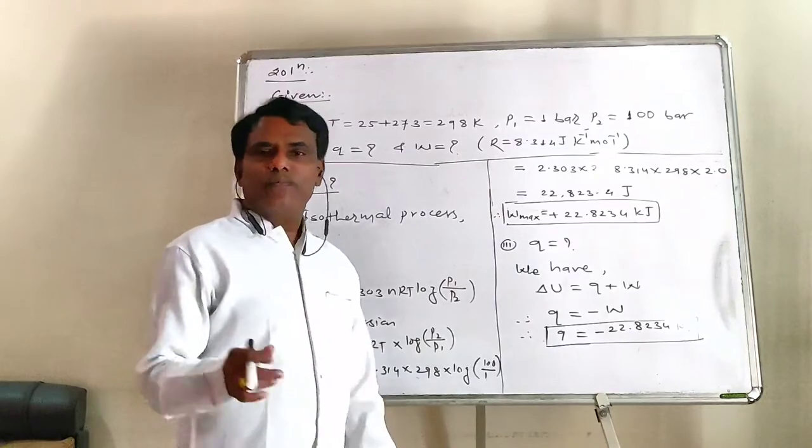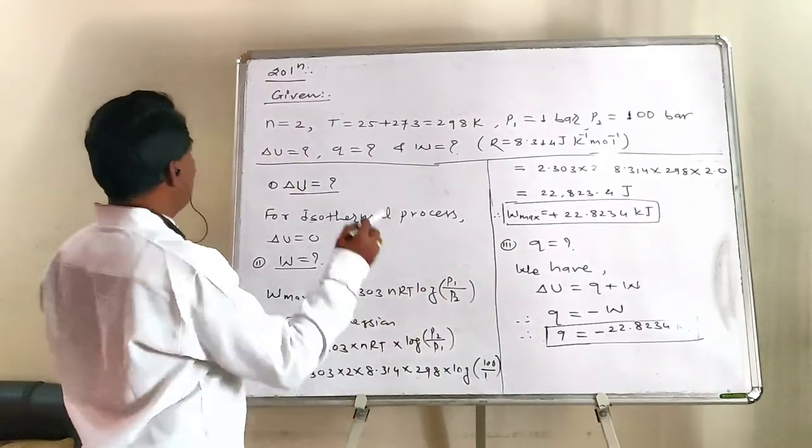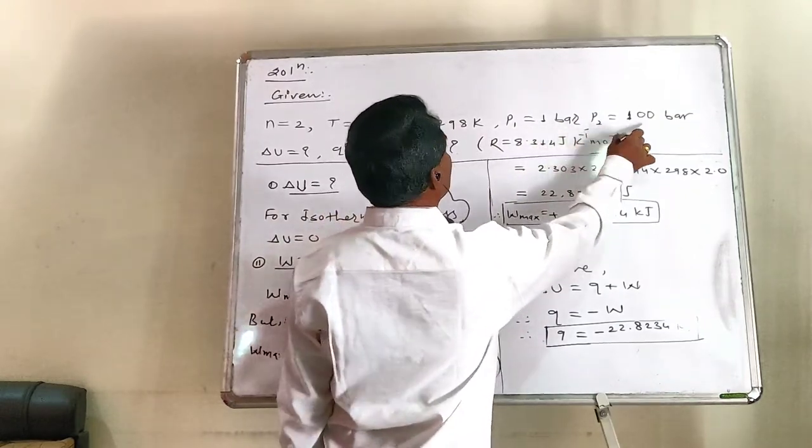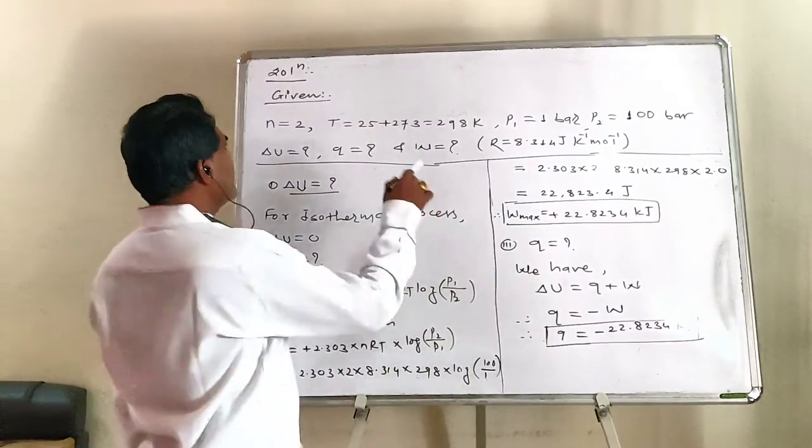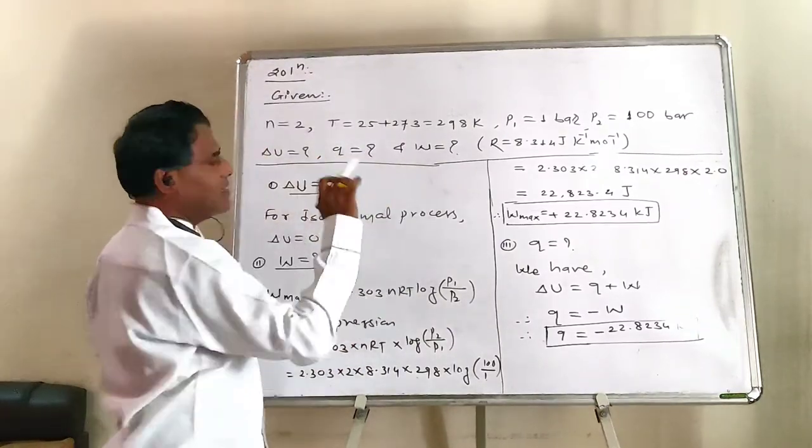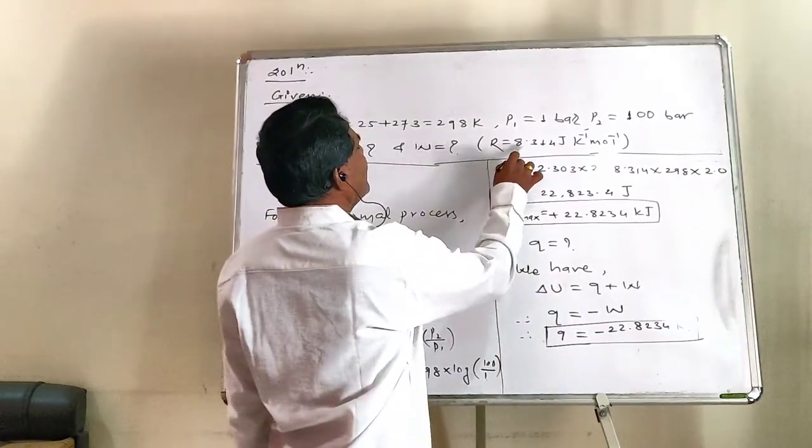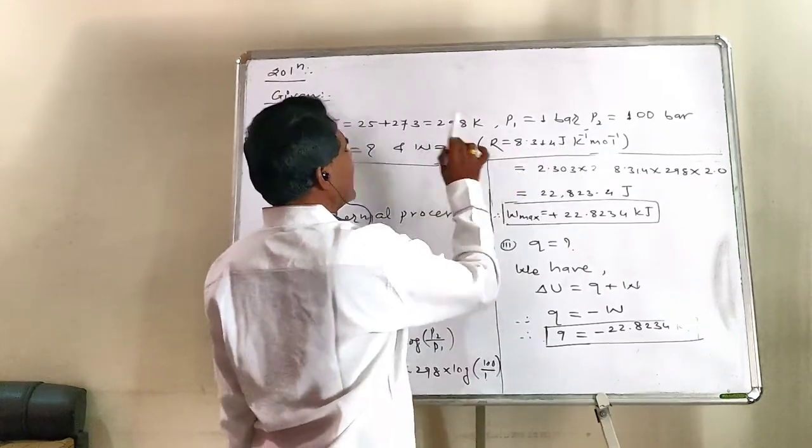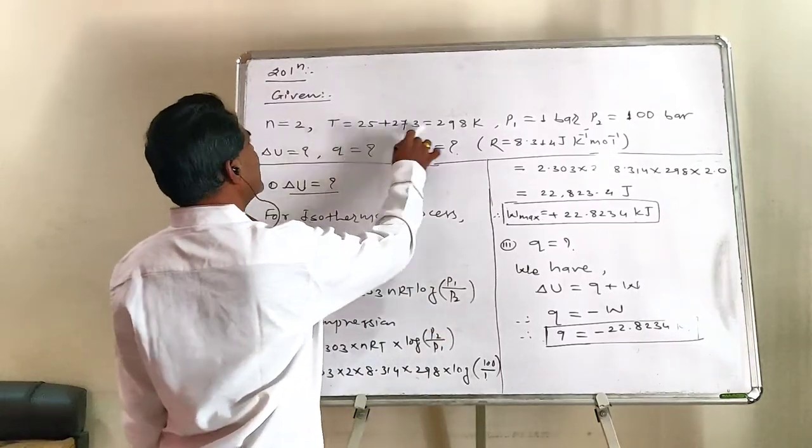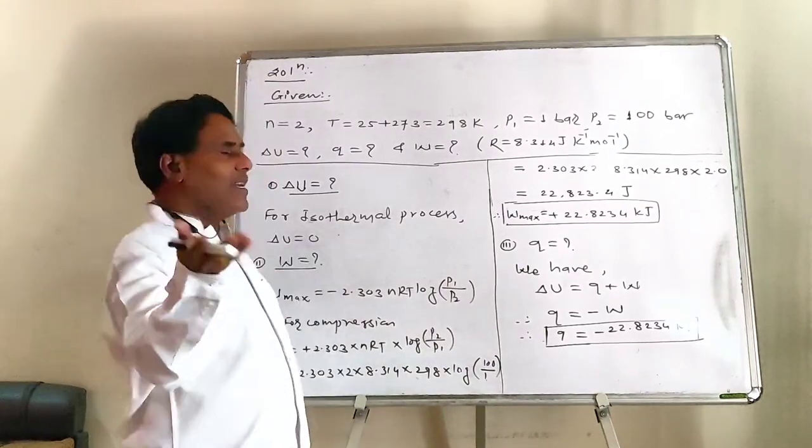Next problem. Aapko screenshot diya hai iska. Aapne mo thik tara se reed kiya ho ga. Chur. See what we are given in this problem. Kia diya hai vitamin. Two modes of an ideal gas. Compressed. From initial pressure P1 equals to 1 bar. To final pressure P2 equals to 100 bar. This compression occurs at 25 degree celsius. And we have to find out internal energy change. Heat energy change. And work done. And at the same time we have seen process is reversible. Aar agar reversible process hoti hai. So units of W. They depend upon units of R. And as it is work of compression. We have to change formula also.